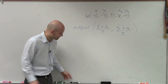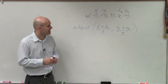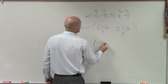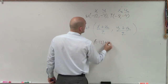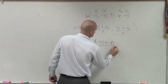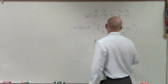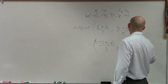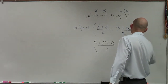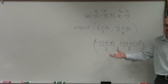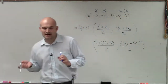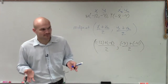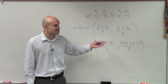Now all we simply need to do is plug in our values for x1 and x2. So we have negative 12 plus negative 8 divided by 2, comma, then we plug in our values for y1, which is negative 7, plus negative 4 divided by 2. Notice I put these in parentheses — that's just to make sure I don't make a mistake on the subtraction sign or the opposite sign.